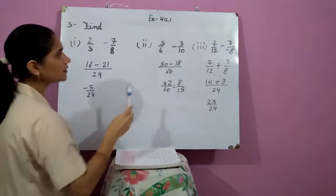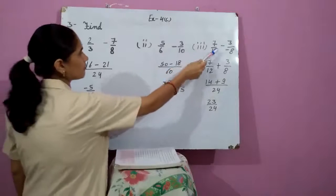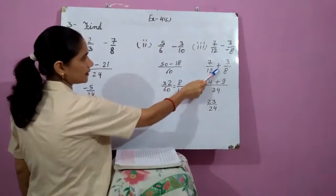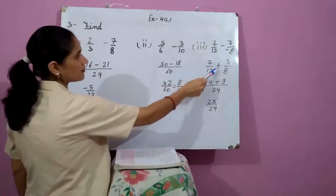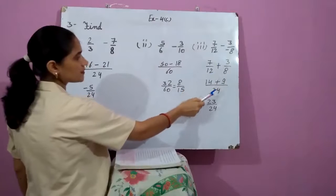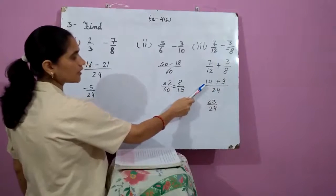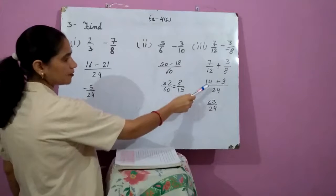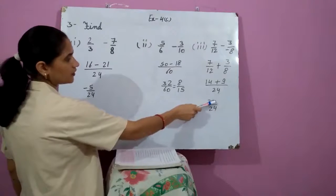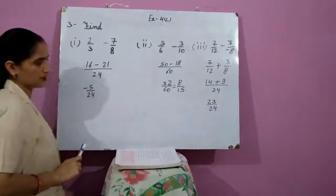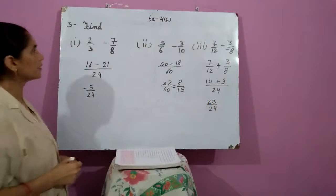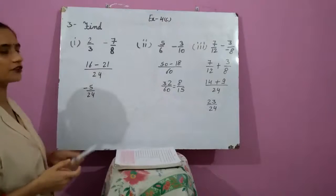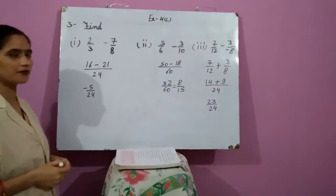Come to the third part: 7 upon 12 minus 3 upon minus 8. Minus minus becomes plus, so this becomes 7 upon 12 plus 3 upon 8. The LCM is 24. After the calculation we get 14 plus 9. On adding both numbers we get 23 upon 24. This is the required rational number. Students, the rest of question number 3, try yourself.